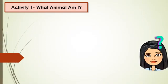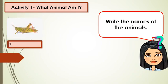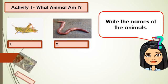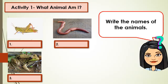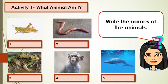Now, let's have some activities. Get your paper and pencil. Activity 1: What animal am I? Write the names of the animals. Number 1 — what do you call this animal? Write its name. Number 2, Number 3 — write the name of this animal. Number 4. Number 5 — what is the name of this animal?